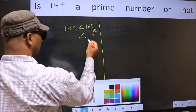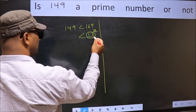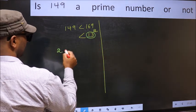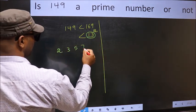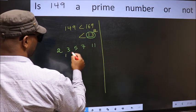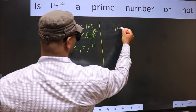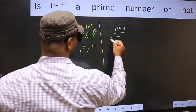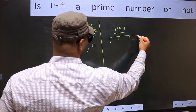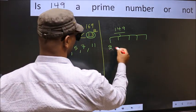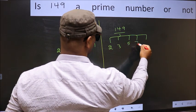Now write all the prime numbers less than this number 13. They are 2, 3, 5, 7, 11. Now for the given number, check divisibility by these numbers: 2, 3, 5, 7, 11.